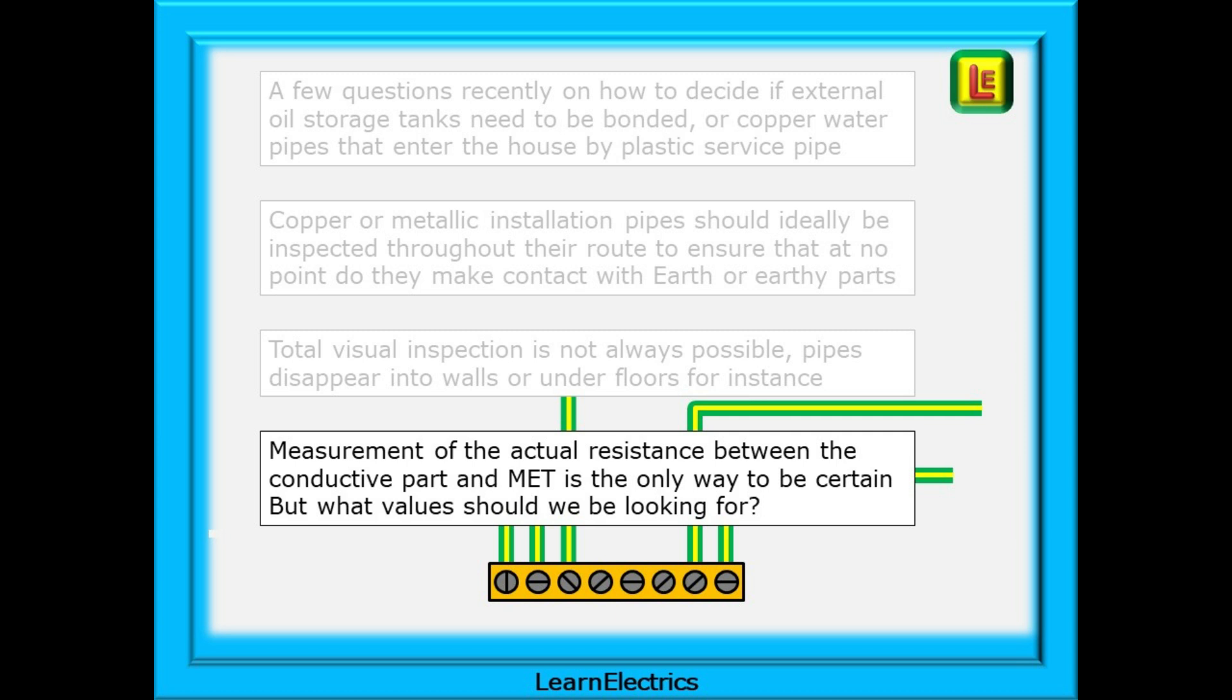Which means that a measurement of the actual resistance between the conductive part and the main earth terminal is the only way to be certain if that conductive part or metal pipe should be bonded or not. But what values of resistance should we be looking for?